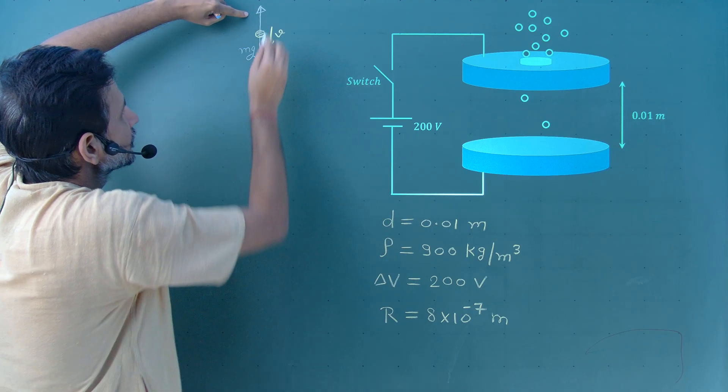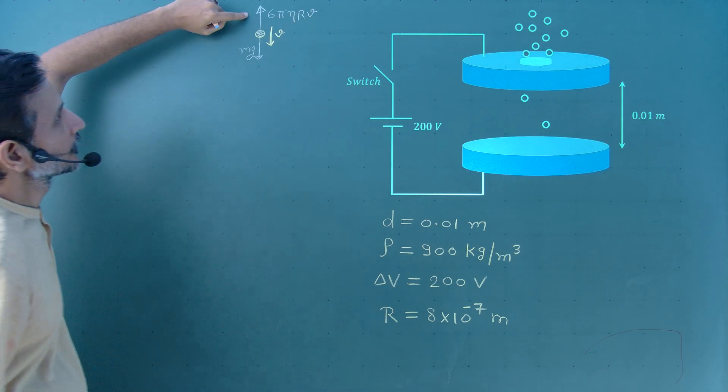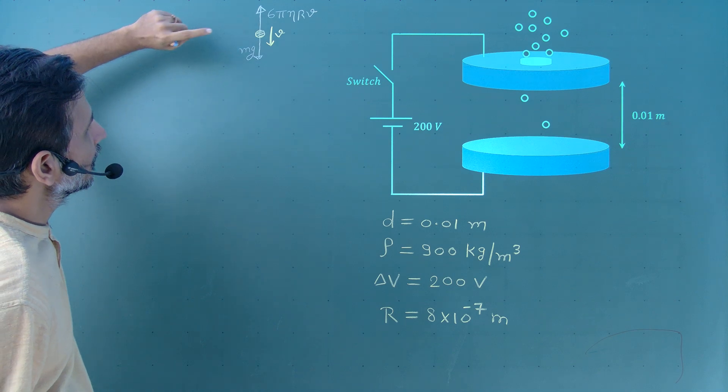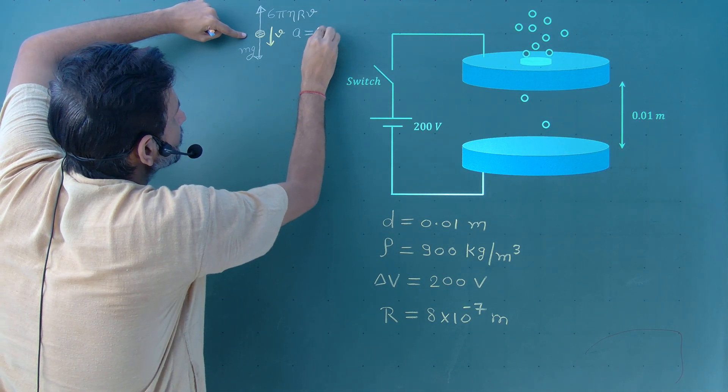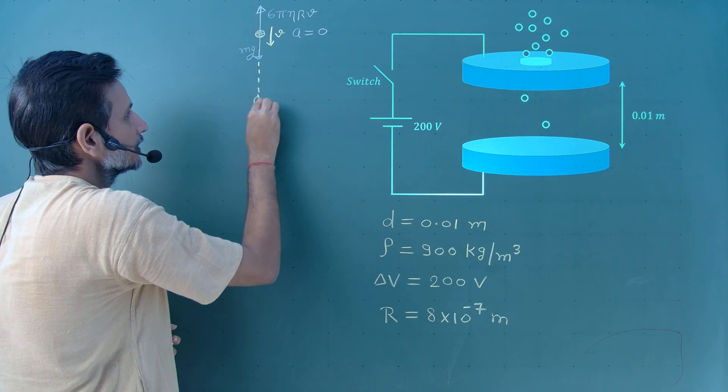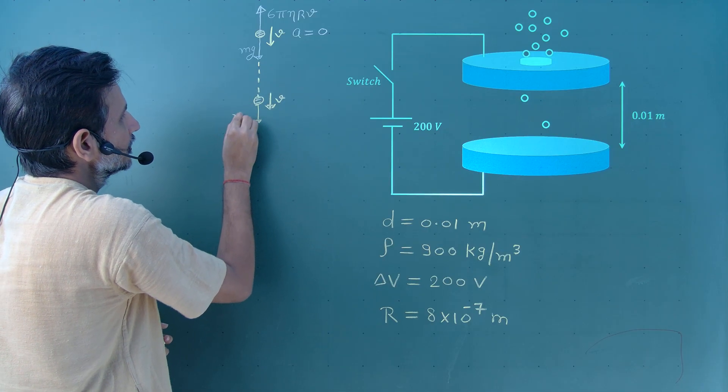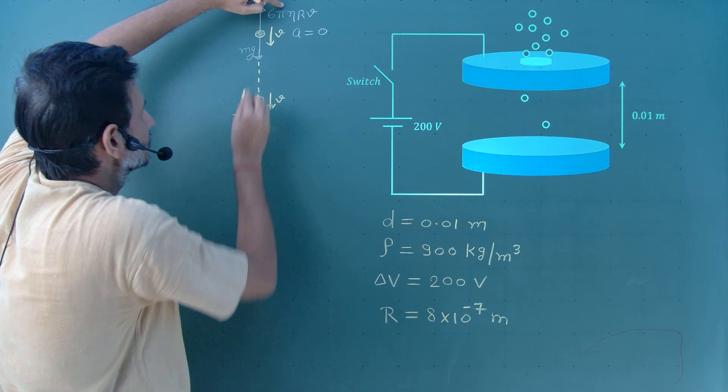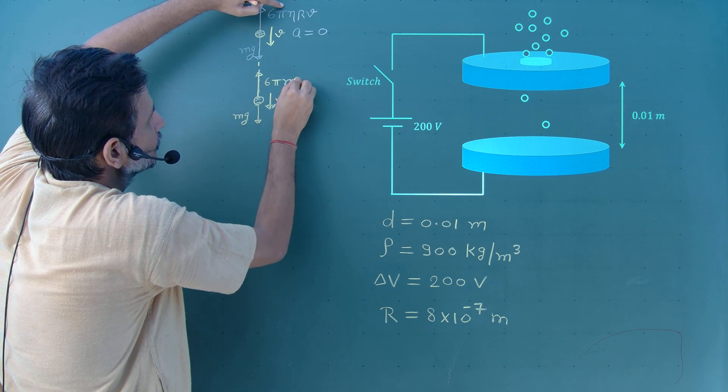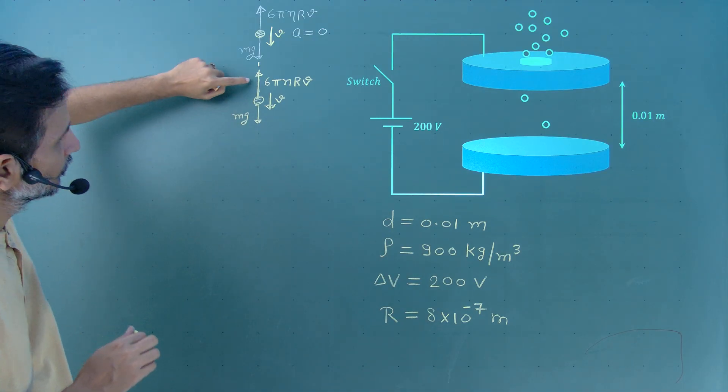Viscous force acts in opposite direction of velocity. And the magnitude of this force is 6 pi eta r into terminal velocity V. As this velocity V is terminal, it means the upward force and downward force are same in magnitude, so they cancel out. It means its acceleration at this point is 0, so the particle moves with same velocity. We have not taken account of buoyancy because this is given in question, neglect buoyancy.